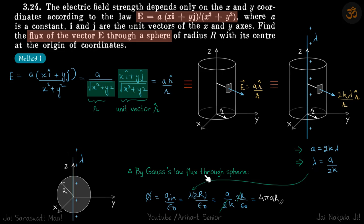By Gauss's law, flux through a sphere should be q in by epsilon. This is the long wire. If you have a sphere of radius r, you can see that charge enclosed will be lambda times 2r. This becomes lambda into 2r by epsilon, and if you put the value of lambda here you will get your answer.